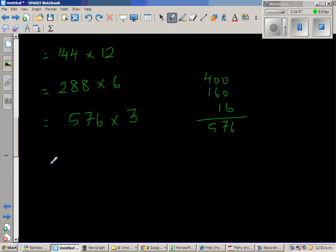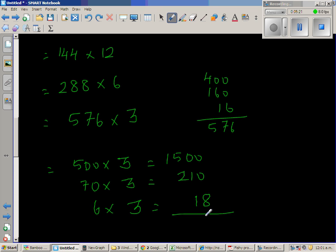So I'm going to write this as 500 times 3, which is 1500. Then you got this 7 which stands for 70. So 70 times 3 is 210. And finally 6 times 3, which is 18. So let us add this. Lining up the numbers according to place value. And this is 1728.